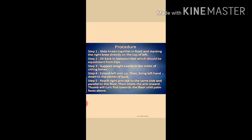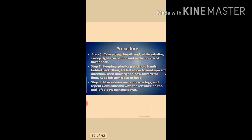Procedure of Gomukhasana: Sit so that the right knee is directly above the left knee. Stretch the left arm to the side, then fold it behind the back. Raise the right arm above the head, then fold it over the right shoulder. The back of the left hand should lie in contact with the spine while the palm of the right hand rests against the spine. Try to clasp the fingers of both hands behind the back. Keep the spine erect and head back. Close the eyes and stay in position for up to two minutes. Unclasp the hands and repeat with the left knee uppermost and the left arm over the left shoulder.